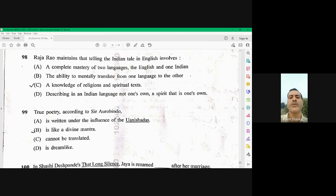Question number 99. True poetry according to Sri Aurobindo. Sri Aurobindo says that the true poetry is like a divine mantra. So B is the right option for 99.